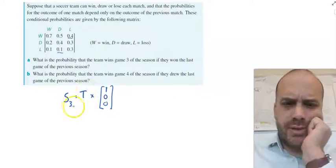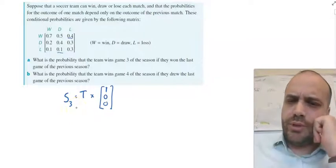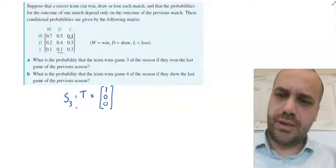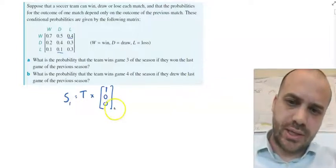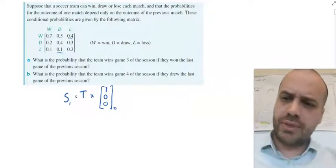Now, the question is, am I raising to the power of 3? Am I raising to the power of 4? What am I doing? Well, if I wanted to know the first game of the season, it would just be the first game of the season. This is the initial state matrix, 0. I'm satisfied with that. I think I would just multiply by the transition matrix once, right, because only one game gets played.